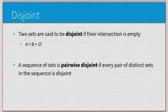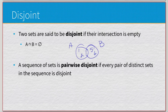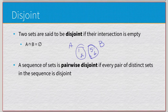Moving on to disjoint sets: two sets are said to be disjoint if their intersection is empty. If set A and set B share elements, they are not disjoint. Removing the shared elements makes them disjoint. A sequence of sets is pairwise disjoint if every pair of distinct sets in the sequence is disjoint — this will come into play when we discuss partitions.